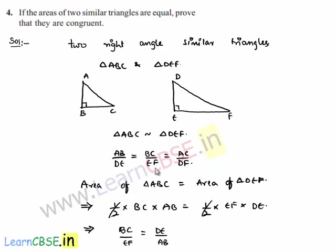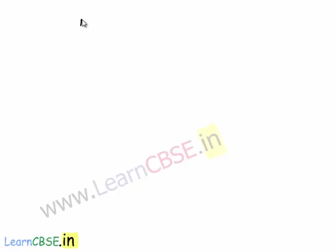From the similarity, BC by EF equals AB by DE. And from the area equality, BC by EF equals DE by AB. Equating these, AB by DE equals DE by AB. This implies AB squared equals DE squared. By taking the square root, we get AB equals DE.